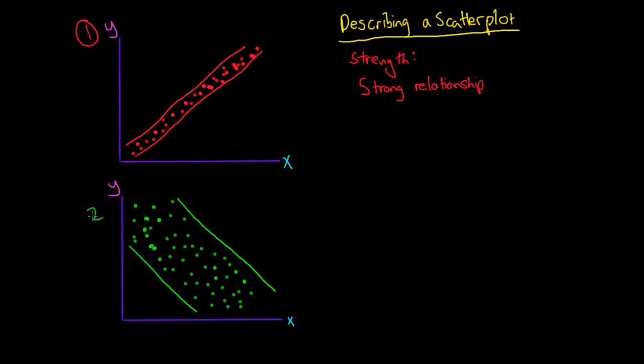But for number 2, if we look at it, we can see these lines are really widely spaced. So we can say that the strength of the relationship, we'd say this is what is called a weak relationship.